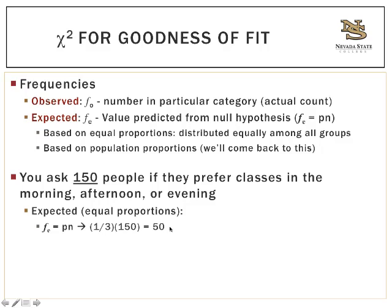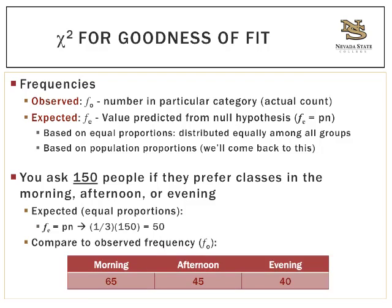Then we compare that to our observed frequency. We asked all 150 people and got these numbers: 65 people preferred morning, 45 preferred afternoon, and 40 preferred evening. So does that pattern differ significantly from what we expected — 50 for each? This is where we have to start figuring out the math. But before we get into that, let's take a step back and look at our hypotheses.